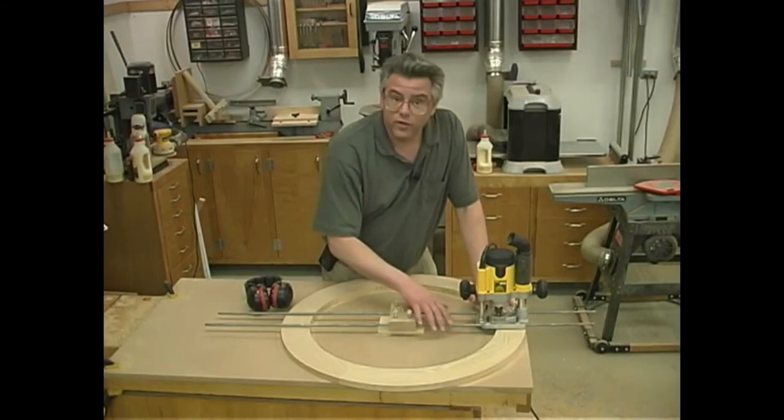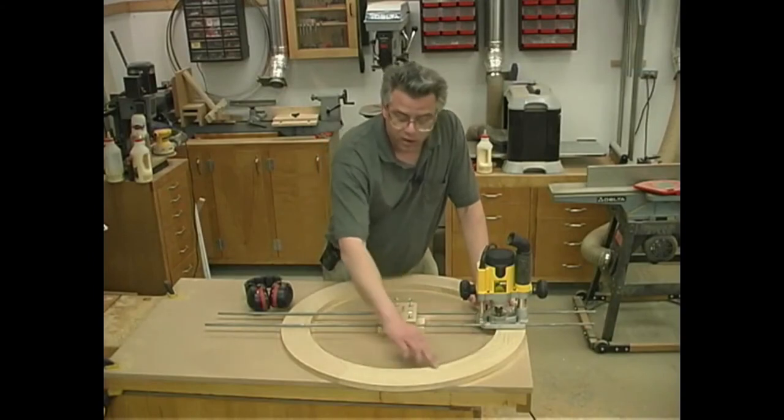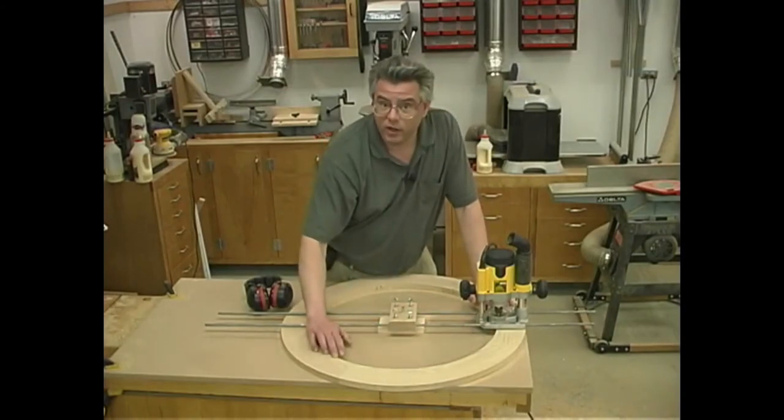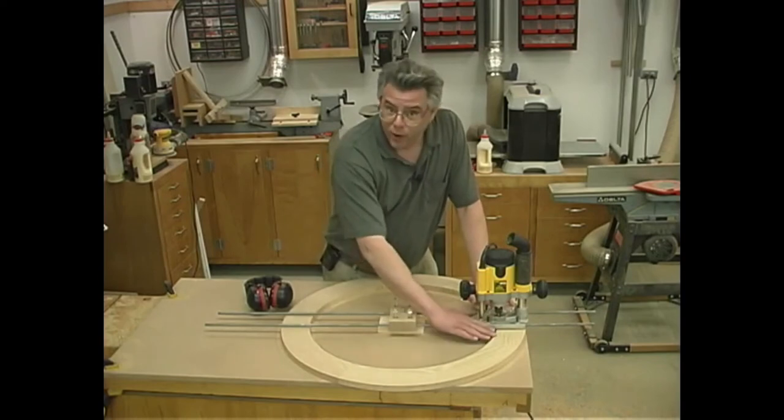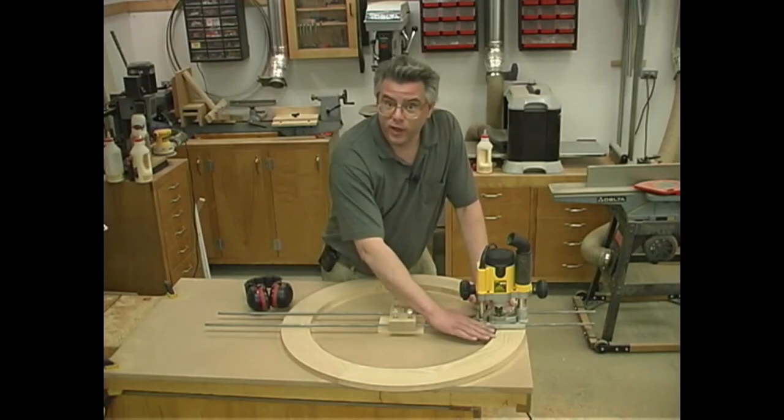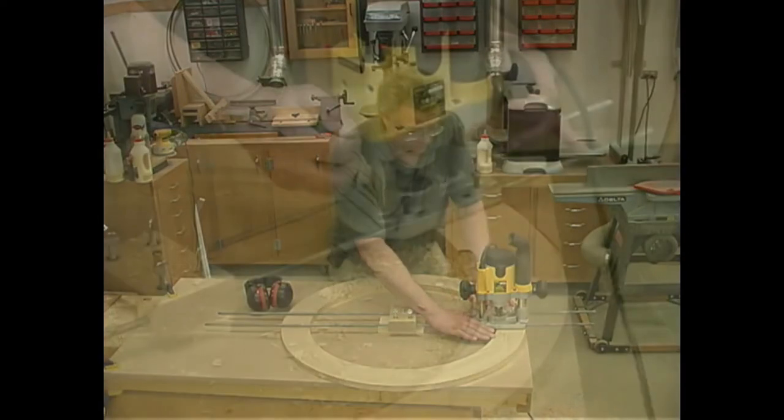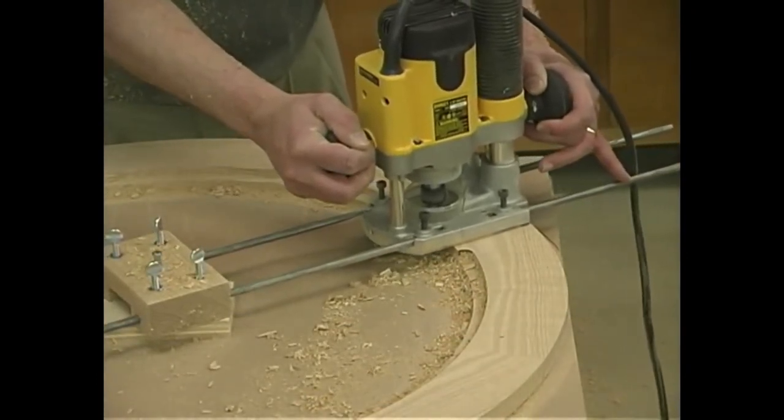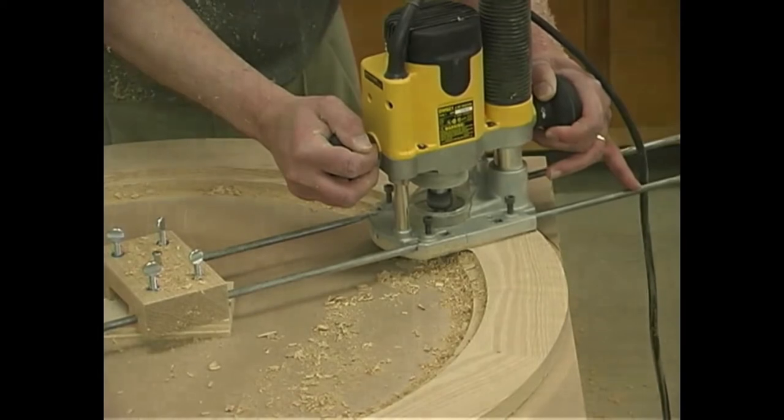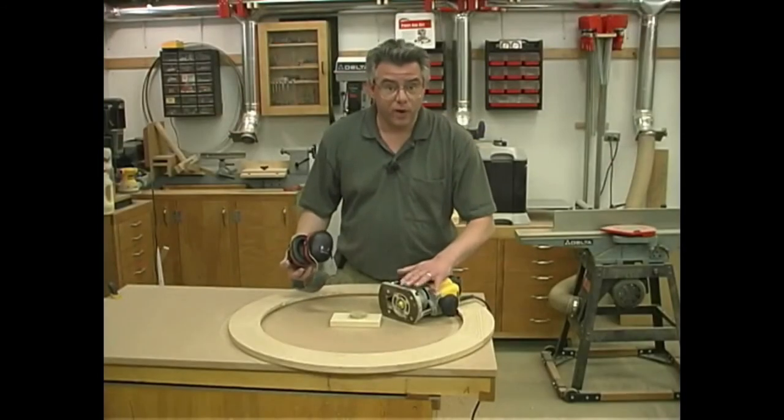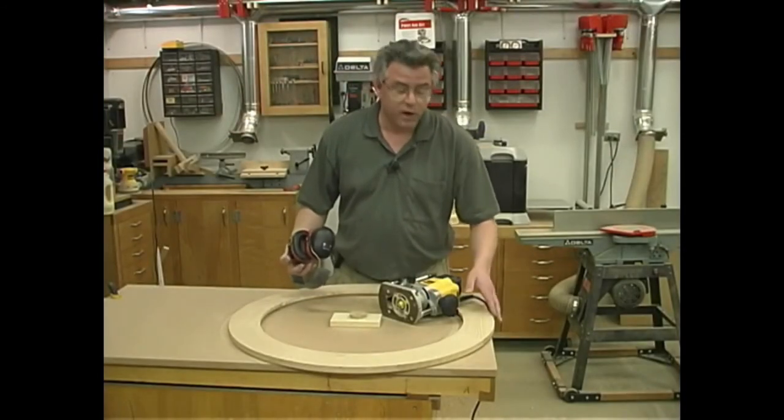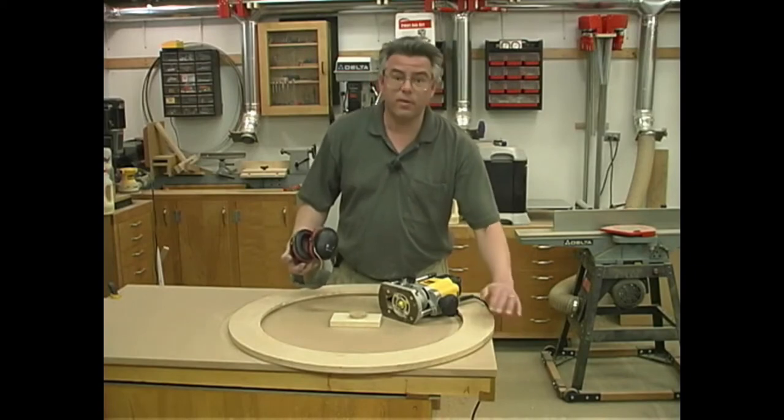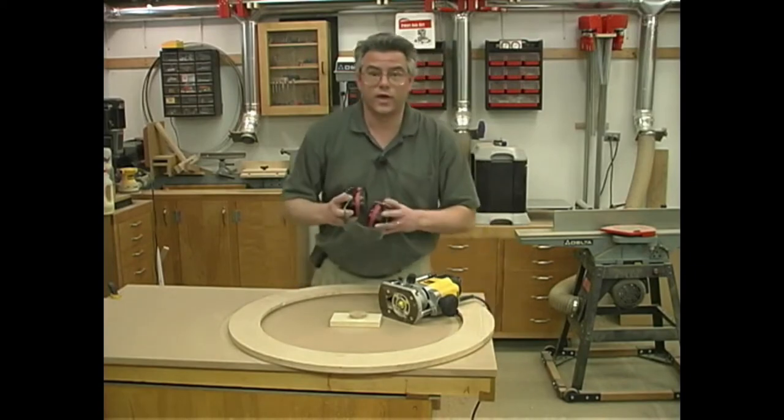Using the same setup, I've adjusted the radius so we can machine the rabbet that will receive our glass top. I've set my router bit depth this time so it's only cutting three-eighths of an inch deep. Using a quarter-inch radius roundover bit in the handheld router, now I can round over the top and bottom faces of the outside edge.